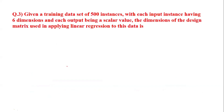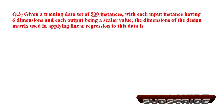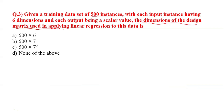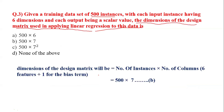Question number three: given a training dataset of 500 instances, with each input instance having six dimensions and each output being a scalar value, find the dimensions of the design matrix used in applying linear regression. The formula to remember is: dimension of design matrix = number of instances × number of columns, where number of columns = features + 1 (for the bias term). Here, features = 6, so columns = 7. With 500 instances, the answer corresponds to option B.